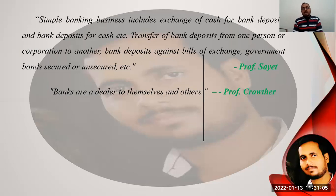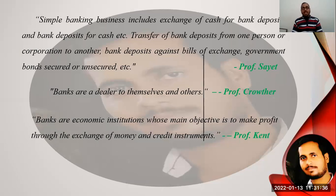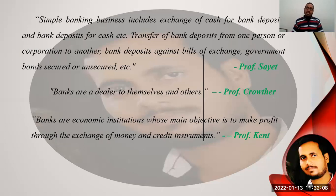According to Professor Crowther, banks are dealers in money — both their own and others'. If we have savings and want to deposit in an institution for safety or earning purposes, the bank provides that facility. If we need some money, the bank provides us a loan. Such institutions performing these facilities are called banks. Professor Kaint says banks are economic institutions whose main objective is to make profit through the exchange of money and credit instruments.